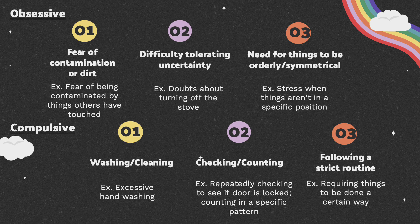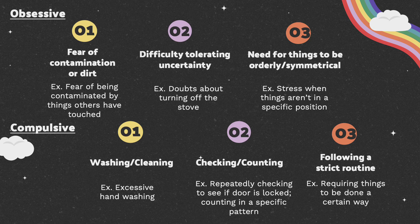In the compulsive subtype, there are also a few common themes. The first is washing and cleaning, with a common symptom being excessive hand washing. Another common theme is counting or checking — a common symptom is repeatedly checking to see if something is done, like turning off the stove, or checking to see if the door is locked. Another common theme is the adherence to a strict routine, meaning that things must be done in a certain way, or a specific routine must be followed every day.